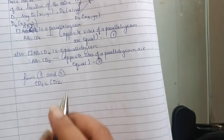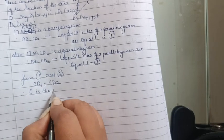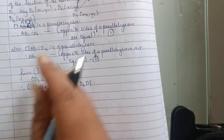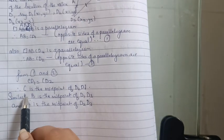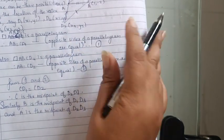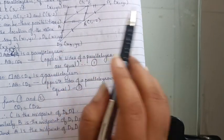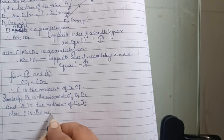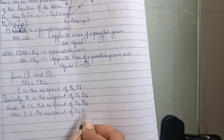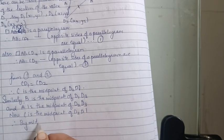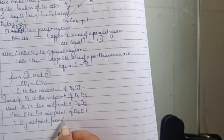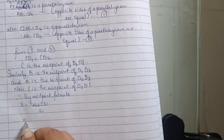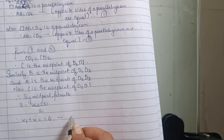From the above, CD1 is equal to CD2, which means C is the midpoint of D1 and D2. Similarly C is also the midpoint of D1D3 and D2D3.